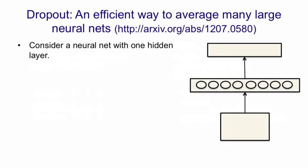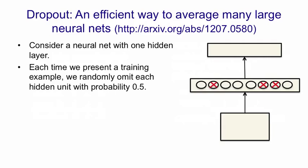Now I want to describe an efficient way to average a large number of neural nets that gives us an alternative to doing the correct Bayesian thing. The alternative probably doesn't work quite as well as doing the correct Bayesian thing, but it's much more practical. So consider the neural net with one hidden layer shown on the right. Each time we present a training example to it, what we're going to do is randomly omit each hidden unit with a probability of 0.5. So we crossed out three of the hidden units here, and we run the example through the net with those hidden units absent.